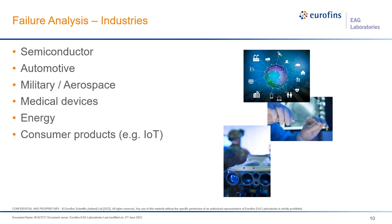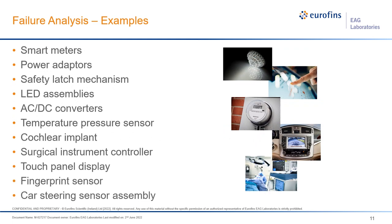There are a wide range of industries that can benefit from failure analysis. These include some of the major industries EAG serves, each with particular issues more important to them than others. Time to market, for example, might matter a lot to companies in the consumer electronics space, whereas high reliability might be more applicable to folks in the military or aerospace industries. All this translates into a huge range of failure analysis cases. Just because it's the same product doesn't mean the failure mode is the same, so the investigation path must be well thought out.